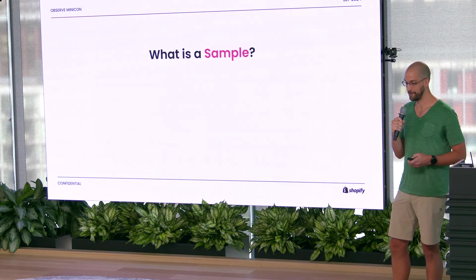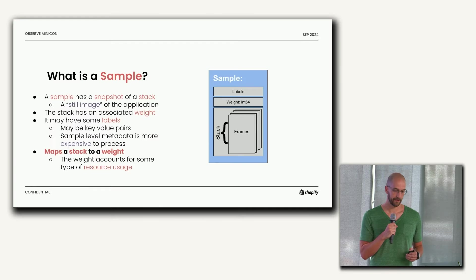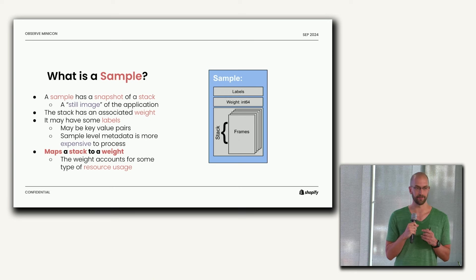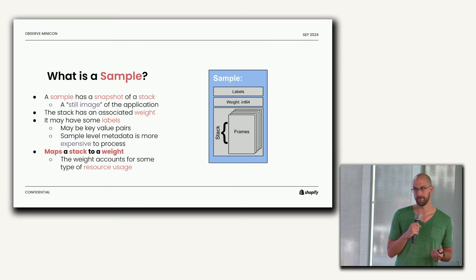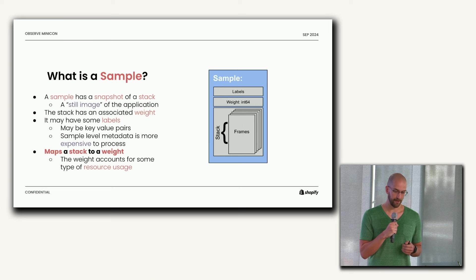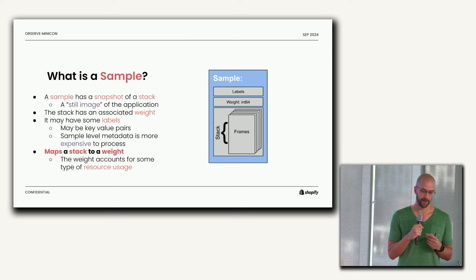So what's a sample? Referring back to the stop motion video analogy, the sample is basically our still image — one individual frame in the video. Typically, a sample will have three main components. There's going to be a stack — this is the thing that we're charging the resource usage to. A weight — that's the actual amount of resource usage; we often think of profiles in terms of time, but this could also be bytes, allocated objects, etc. It's a fairly abstract concept. And there could actually be some sample-level metadata, which can be fairly expensive to collect but very useful in some cases. Ultimately, the purpose of a sample is a mapping of resource usage: the stack is the resource user and the weight is the amount of resources it used.